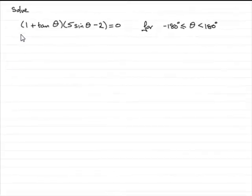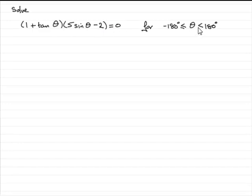Now in this part of the question we're asked to solve (1 + tan θ)(5 sin θ - 2) = 0 for θ greater than or equal to minus 180 but less than 180.